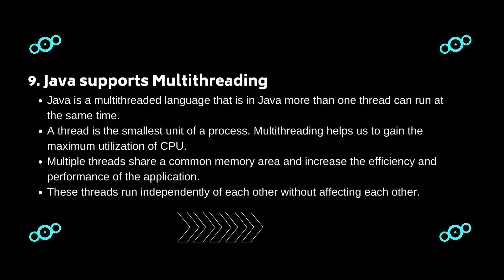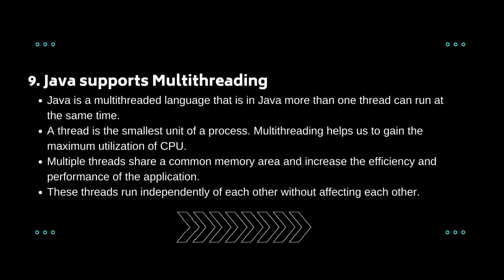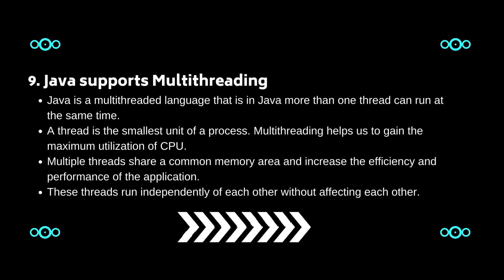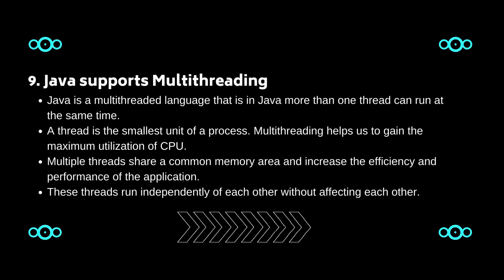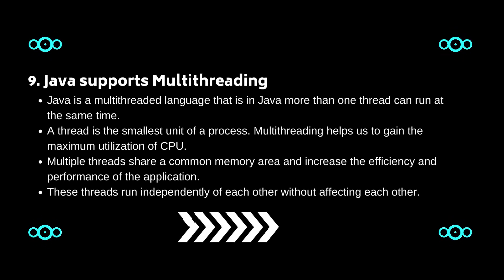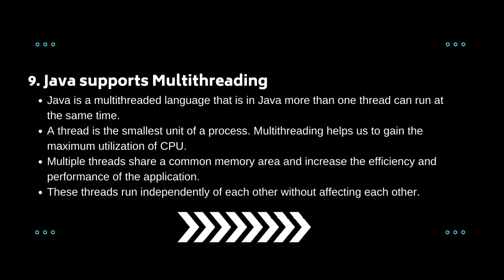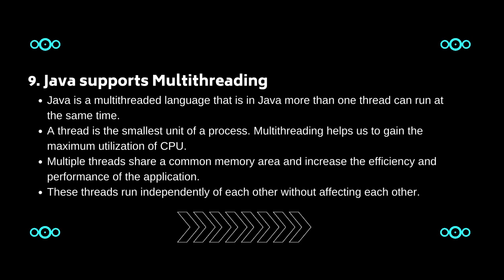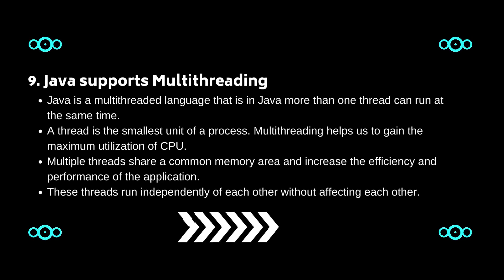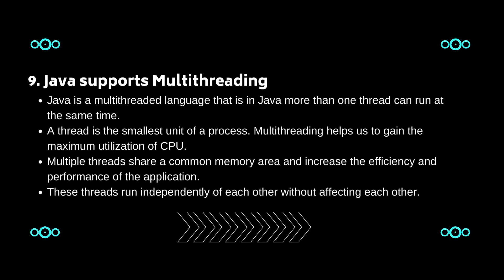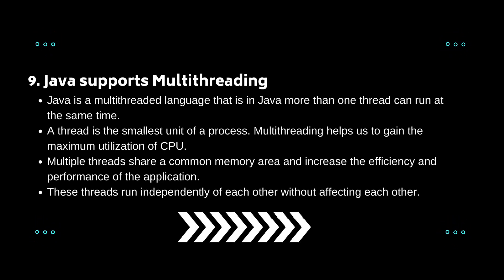Nine: Java supports multi-threading. Java is a multi-threaded language, meaning more than one thread can run at the same time. A thread is the smallest unit of a process. Multi-threading helps gain maximum CPU utilization. Multiple threads share a common memory area and increase the efficiency and performance of the application. These threads run independently of each other without affecting one another.